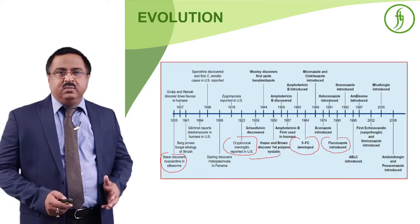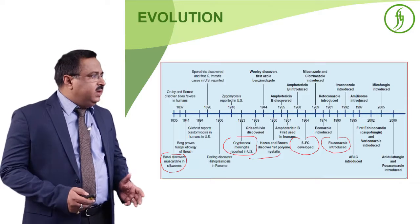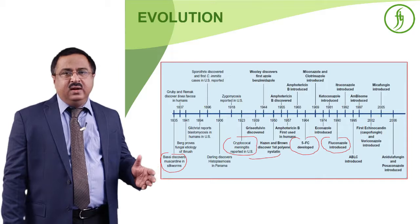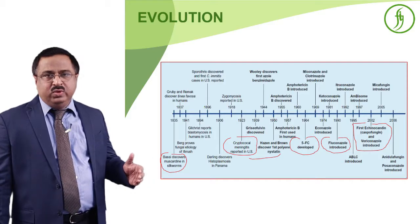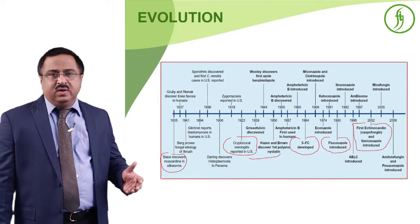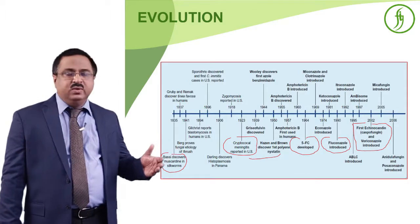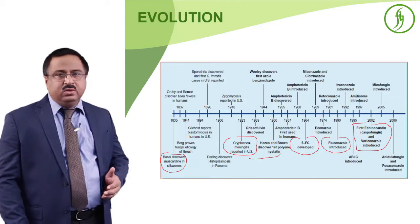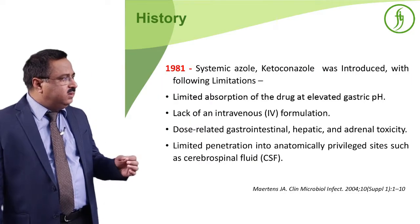The most important and wide-spectrum antifungal agent, fluconazole, which is still widely used to date, came to the market in the year 1990. It is a well-tested drug and its importance is well established. In the last two decades, we have the echinocandins, which are the most important breakthrough as far as antifungal agents are concerned. The first echinocandin, caspofungin, came in the year 2002, followed by micafungin in 2005, and then anidulafungin.